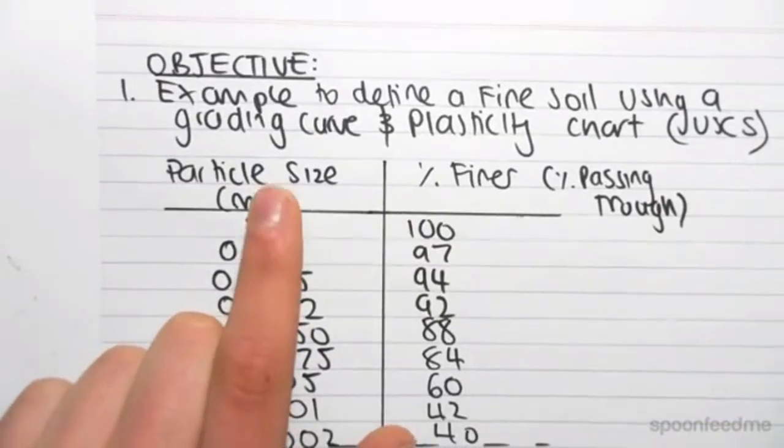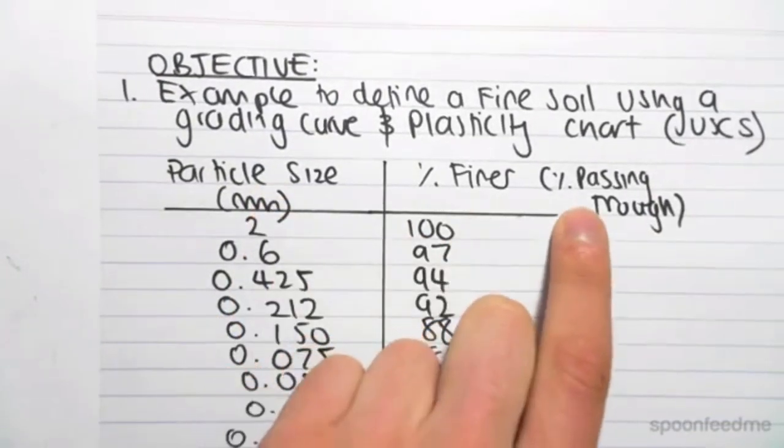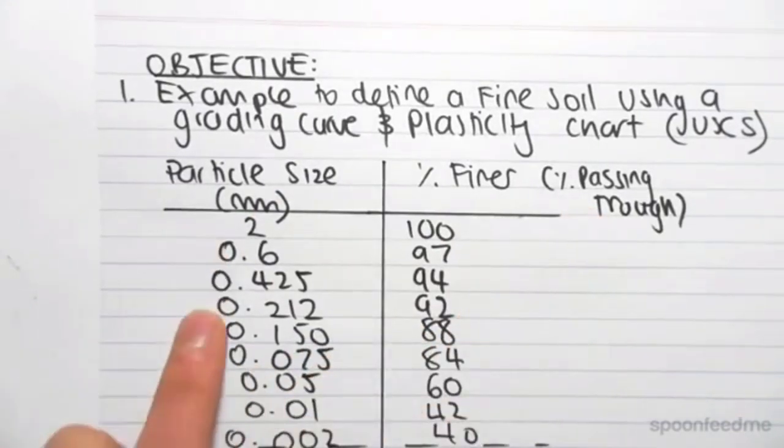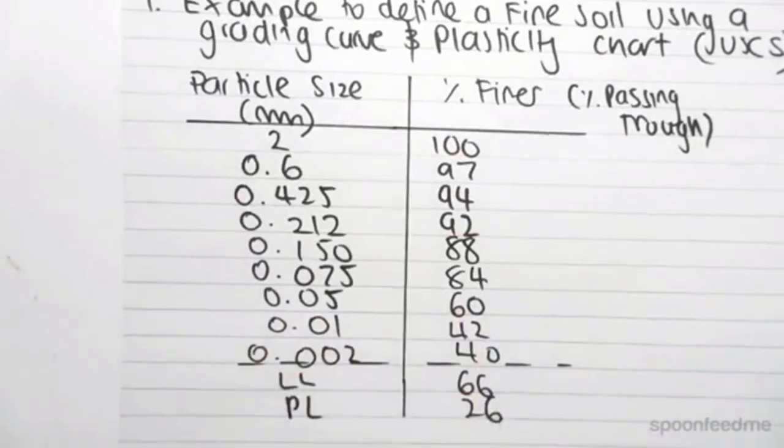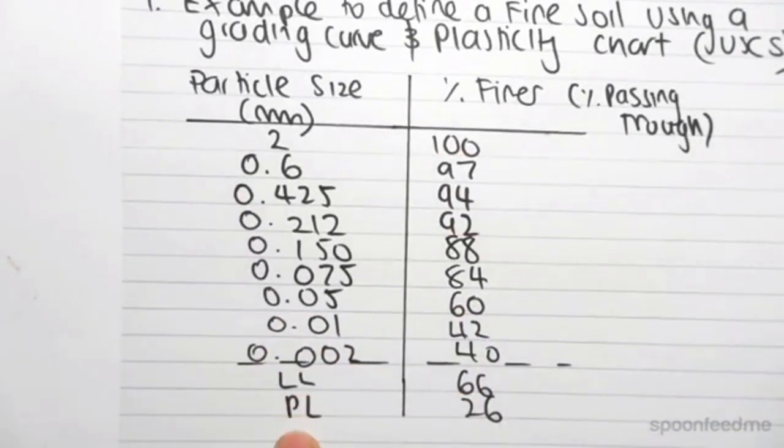We've been given the particle size against the percents finer, or I like to think of it as the percents passing through. We've been given a range of values, a range of diameter sizes, against how much is passed through. We've also been given the liquid limit and the plastic limit.